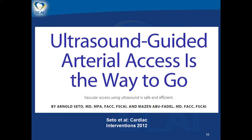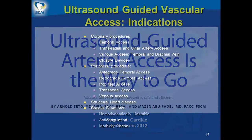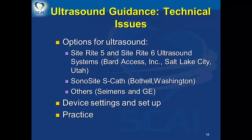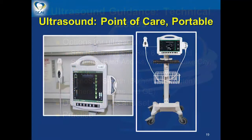Ultrasound-guided vascular access is a straightforward technique that is relatively easy to learn and utilizes equipment readily available in most hospitals. With reasonable experience, vascular access using ultrasound is safe and efficient. There are multiple applications in the cardiac cath lab, including coronary procedures, peripheral, and structural heart procedures and interventions. There are several ultrasound devices commercially available. At our institute, we use the SITRITE-6 point-of-care portable ultrasound to assist in accurate vascular access.